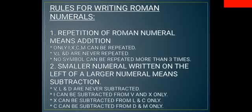V, L and D are never repeated. We can never see the repetition of V, L and D. This is the second rule. No symbol can be repeated more than three times. We cannot write like X, X, X three times. This is the rule.